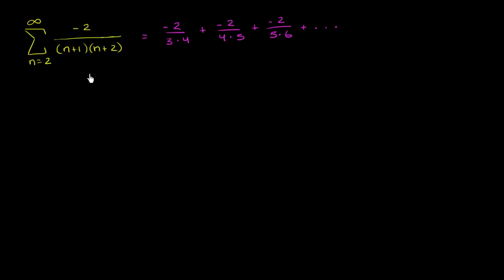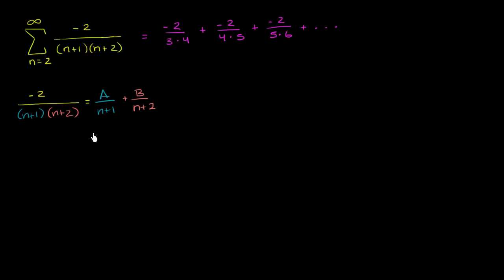Let's try to manipulate this and see if we can rewrite this as a sum of two fractions. So this is negative 2 over (n+1)(n+2). We remember from partial fraction expansion that we can rewrite this as A over (n+1) plus B over (n+2). This is reasonable because if you're adding two fractions, the common denominator would be (n+1)(n+2). And since the degree of the numerator is lower than the degree of the denominator, we're going to have constant terms up here.